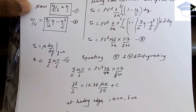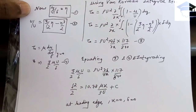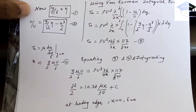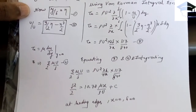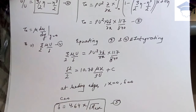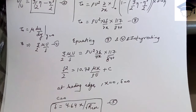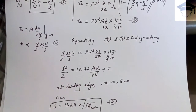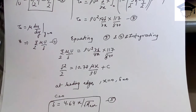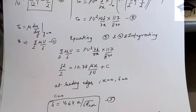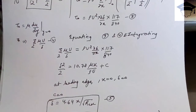Now equating equations 3 and 4 and integrating, we get δ²/2 = 10.78·μx/(ρU) + C, where x is the distance from the leading edge. At the leading edge, that is at x = 0, the boundary layer thickness is zero, so δ = 0. Using this boundary condition, we get C = 0, meaning the constant of integration is zero.